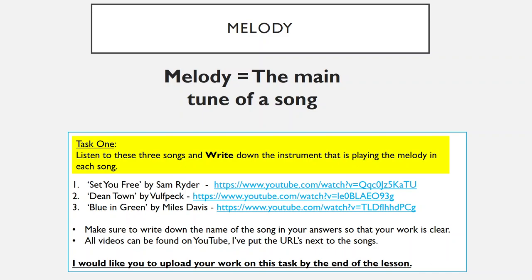For task one, I would like you to listen to three songs: 'Set You Free' by Sam Ryder, 'Dean Town' by Vulfpeck, and 'Blue in Green' by Miles Davis. I've put the URLs next to each one. Listen to those three songs and write down the instrument that is playing the melody in each song. Make sure you write down the name of each song as well so that your work is clear. All videos can be found on YouTube.